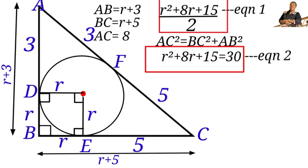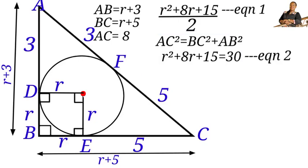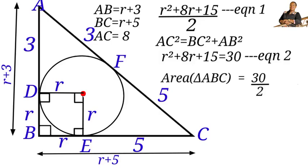Taking equation 2 and equation 1, we now have the same expression R² + 8R + 15 appearing in both. So we substitute 30 in place of R² + 8R + 15 in equation 1: area of triangle ABC = 30 / 2 = 15 square units. Therefore, the area of this triangle is 15 square units.